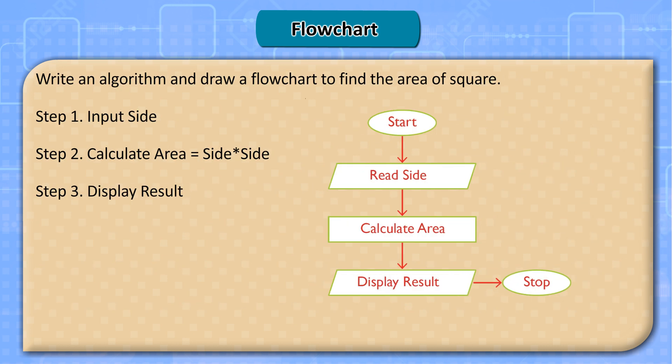Write an algorithm and draw a flowchart to find the area of a square. Start — read side — calculate area — display result — stop. Step 1: input side. Step 2: calculate area = side × side. Step 3: display result.